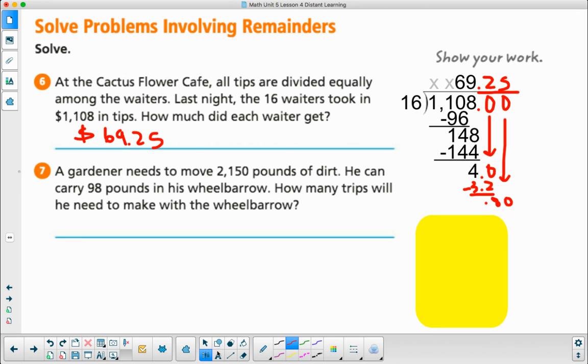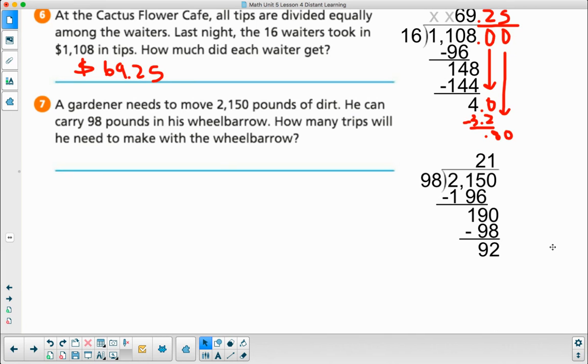Number 7: a gardener needs to move 2,150 pounds of dirt. He can carry 98 pounds in his wheelbarrow. How many trips will he need to make? He had 2,150 pounds divided by 98 pounds each trip. That gave me 21 trips, but there's still 92 left over. That 92 remainder represents 92 pounds of dirt yet. He's going to need one more wheelbarrow trip, isn't he? So 22 trips.